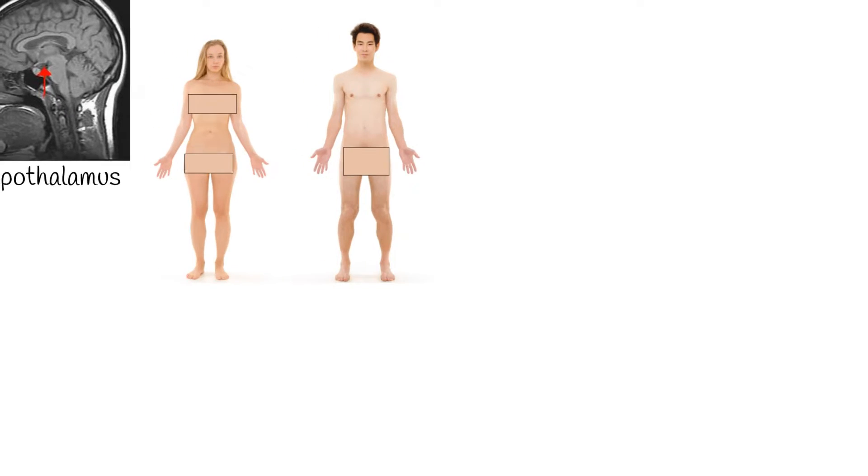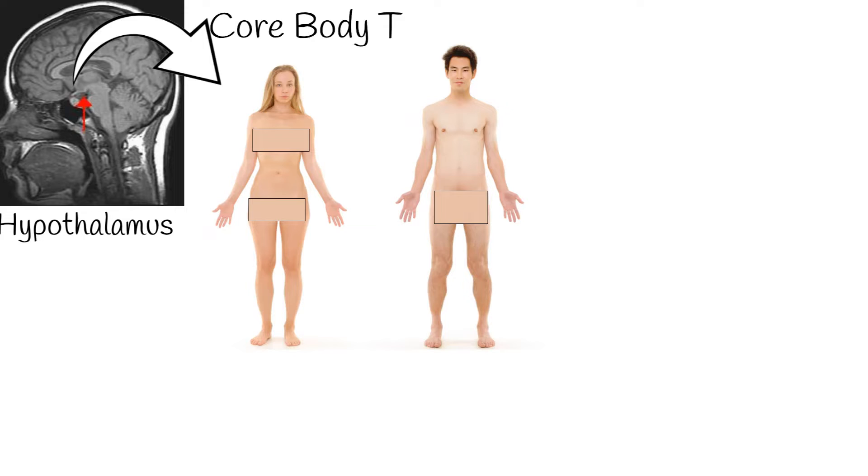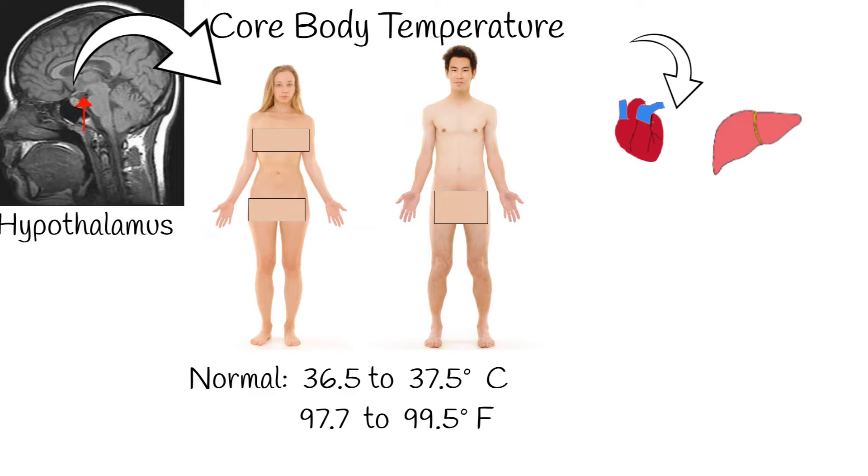The hypothalamus controls body temperature. A human's core body temperature is 36.5 to 37.5 degrees Celsius or 97.7 to 99.5 Fahrenheit. Core body temperature means the temperature in internal organs.